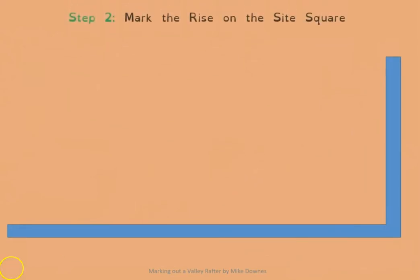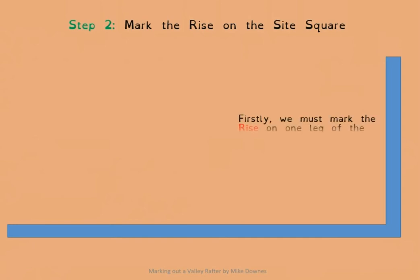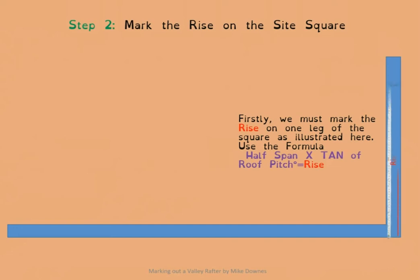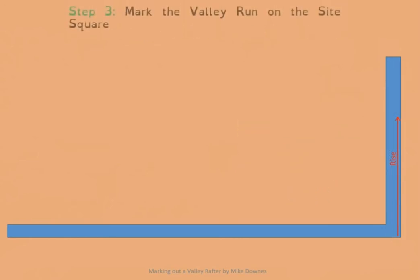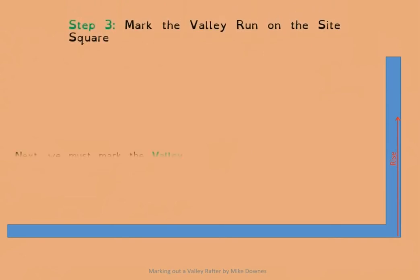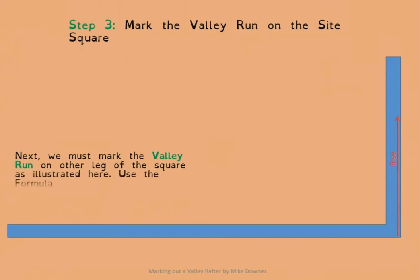The first thing we need to establish is the rise of the roof. Hook your tape from outside one wall plate to outside the other, take half of that — that's half the span — and use that formula to give you the rise, usually on the shorter leg of the square. To get the valley run, use the formula: half the span multiplied by the square root of two, and that gives you the valley run distance.